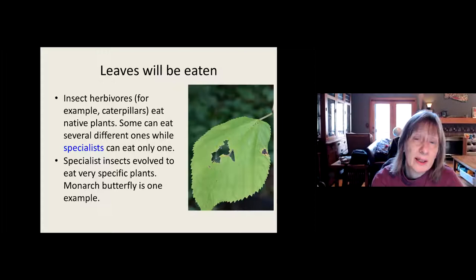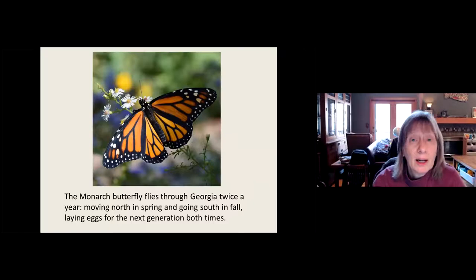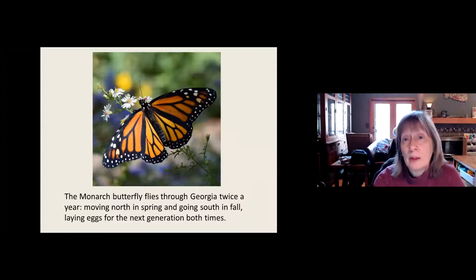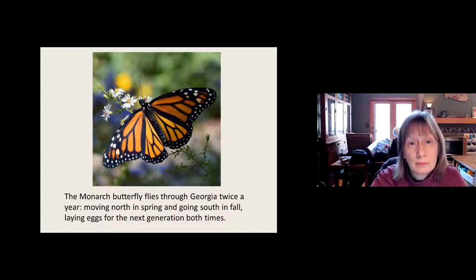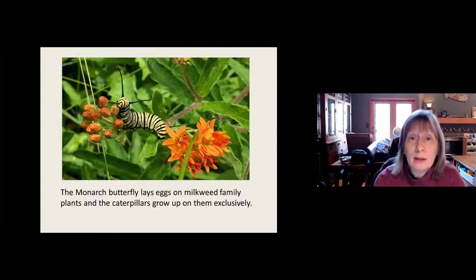The monarch butterfly is probably our best example. The monarch comes through Georgia twice a year — in the spring around early April it moves north, and it goes south in the fall, usually in August and September. In both directions it lays eggs for the next generation. It lays eggs only on plants in the milkweed family, and the caterpillars can grow up on them exclusively. The monarch can't lay eggs on crepe myrtle, grass, or tomatoes — it's going to look for milkweed, and that's the only place it will lay an egg.